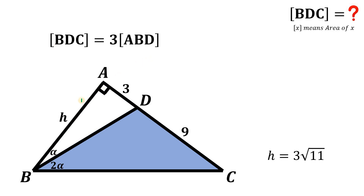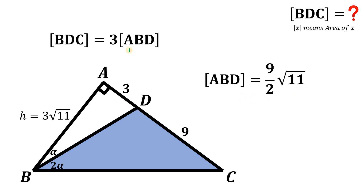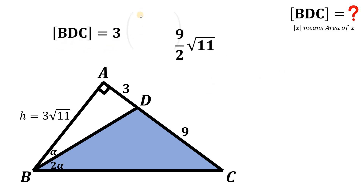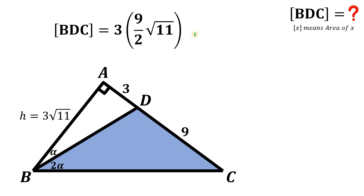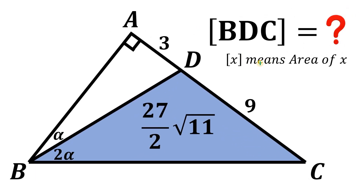We can now find the area of triangle BDC, but first we need the area of triangle ABD. The area of triangle ABD equals one half times base times height, which is one half times 3 times 3 root 11, giving 9 over 2 times the square root of 11. The area of triangle BDC is 3 times that, so 3 times 9 over 2 times root 11, which equals 27 over 2 times the square root of 11 square units. And as always, we are done here.